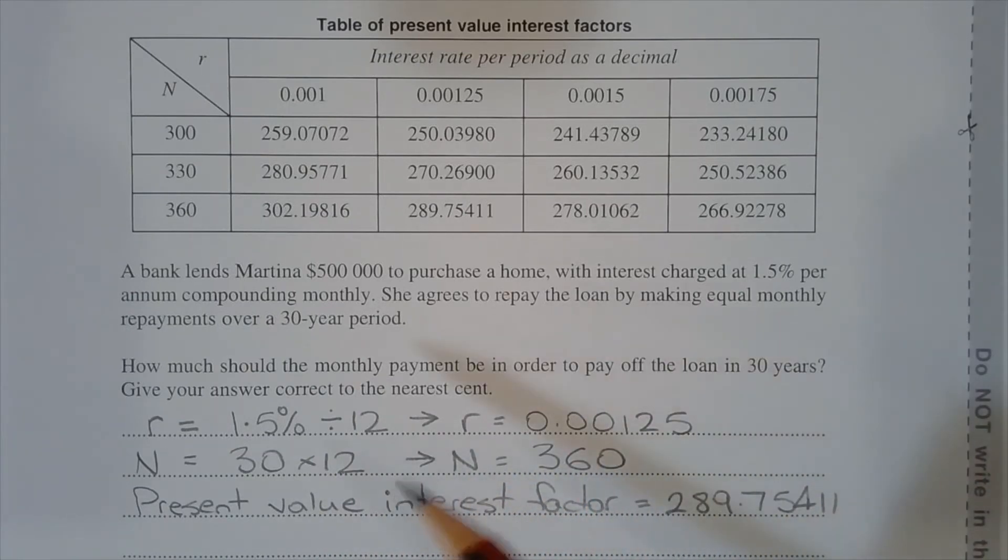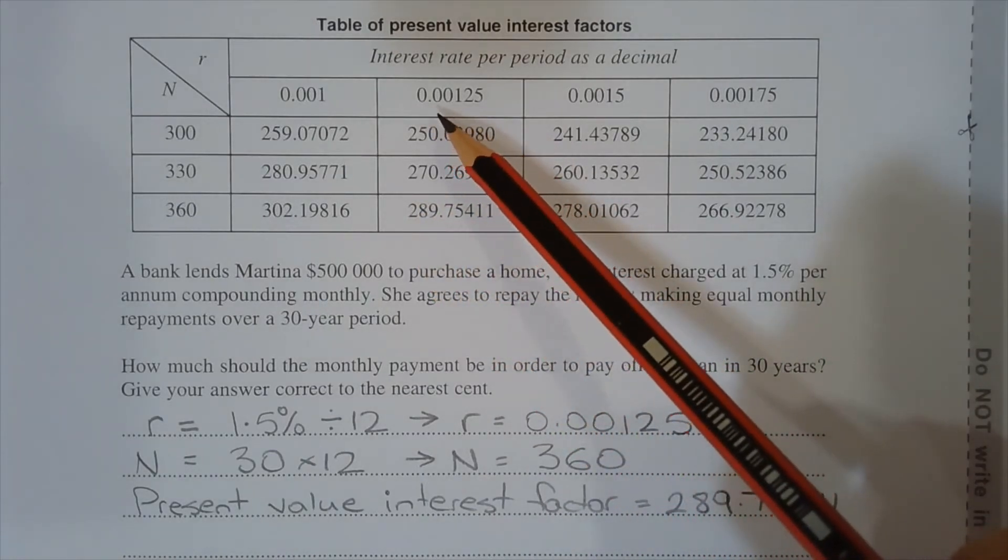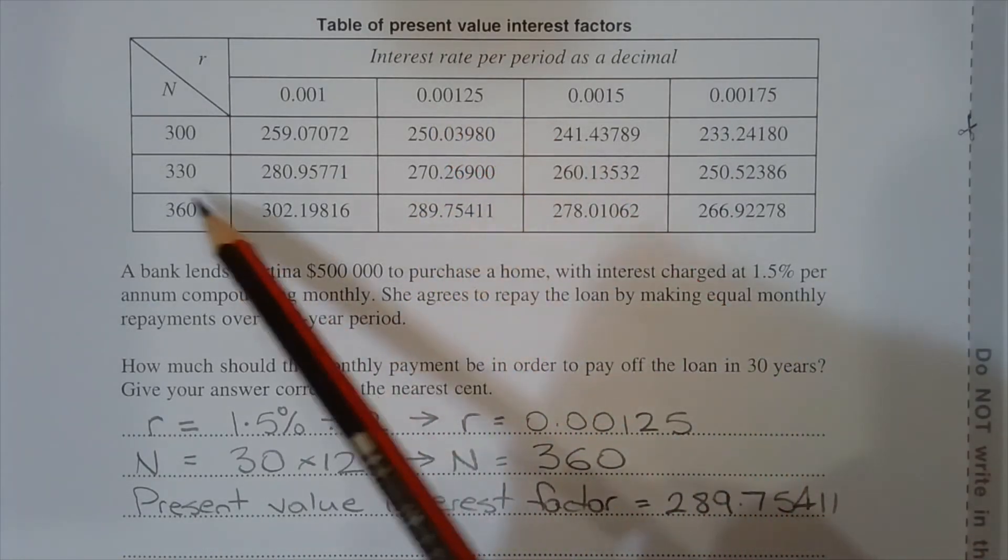So the present value interest factor to reference is this value here from column 0.00125 and row 360.